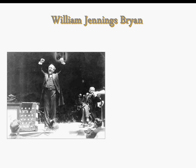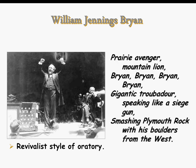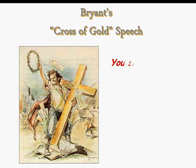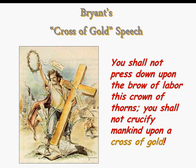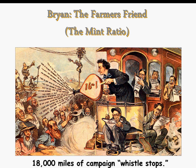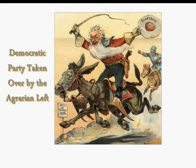Bryan was quite an orator, getting people worked up. Called 'The Prairie Avenger' and 'The Mountain Lion,' he was a gigantic troubadour speaking like a siege gun, smashing rocks with his boulders from the West. He certainly had the ear of the people. He delivers a speech dealing with the gold standard. He conducted a whistle-stop campaign by rail, going all over the country telling people what he believed and his vision for America.